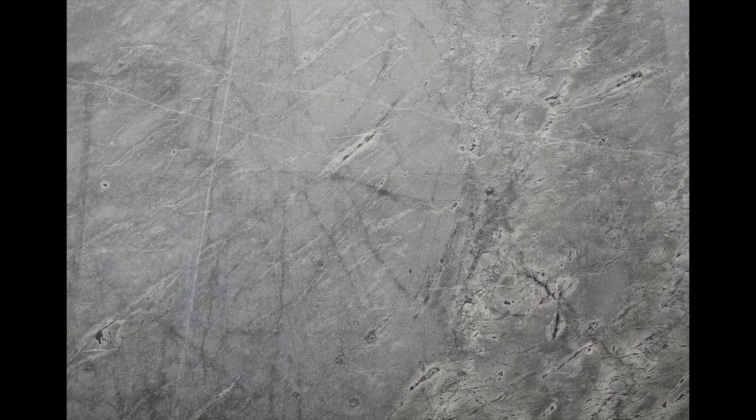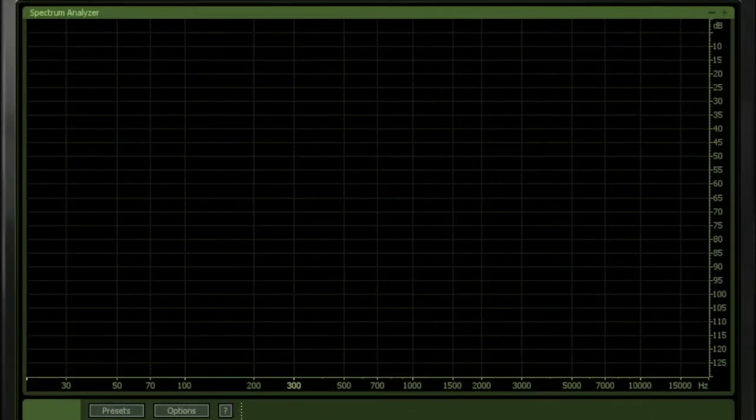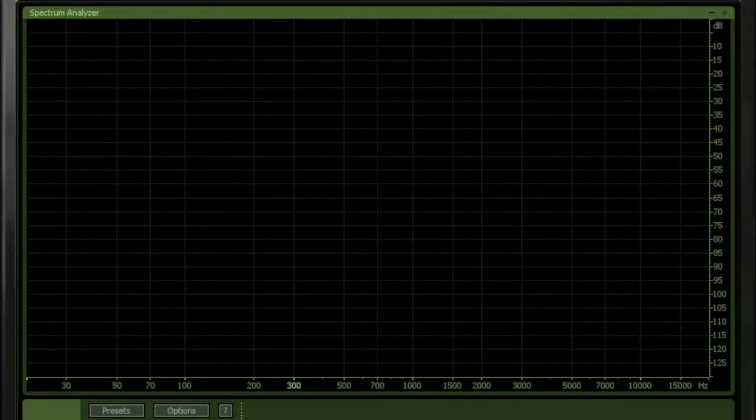Lastly, we have gray noise. Gray noise attempts to create a noise profile that has equal perceived loudness in all bands. This can be approximated by filtering the noise through a psychoacoustic loudness curve, such as an inverted A-weighted curve.